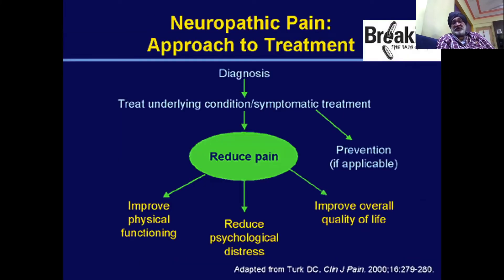The approach for treatment of neuropathic pain aims to break the chain of signs, symptoms, and pain. We should first diagnose completely, then treat the underlying condition such as diabetes, vitamin deficiency, or cancer, thereby giving symptomatic treatment or even prevention. Once you reduce the pain, there is improvement in physical functioning, psychological status, and quality of life.